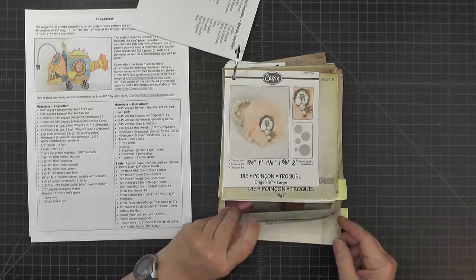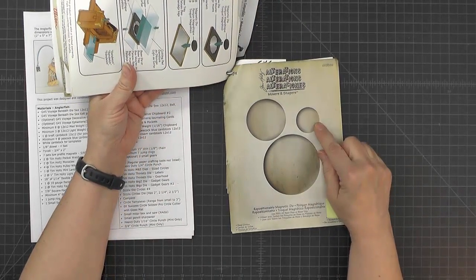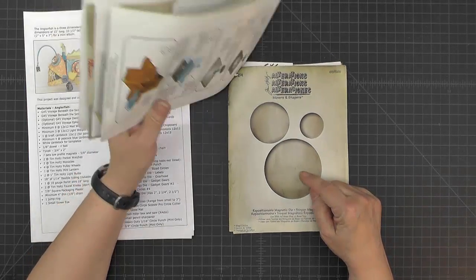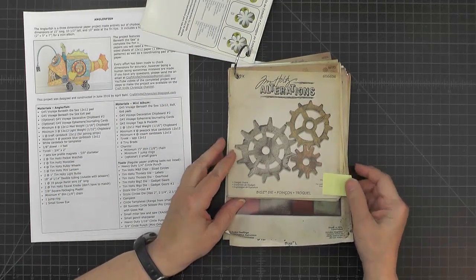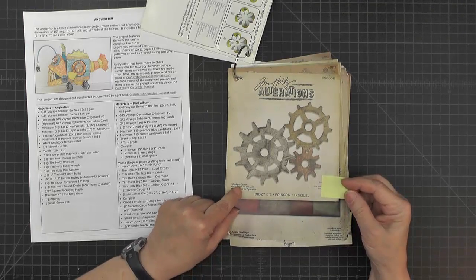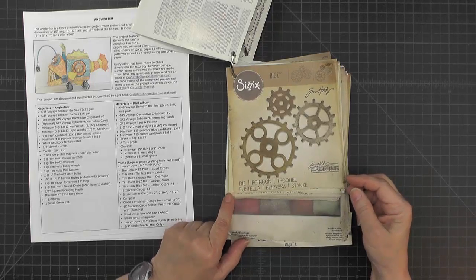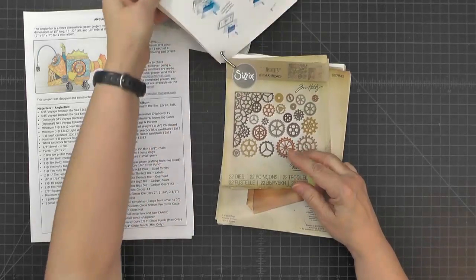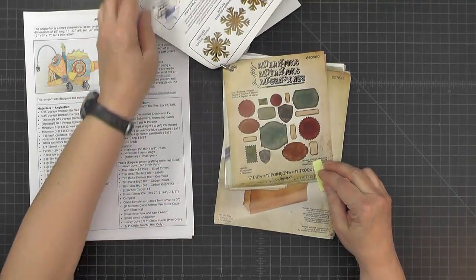And then there's a Movers and Shapers die that's also circles, and then I use two of the Gadget Gears dies, the Bigz dies, both Gadget Gears the original one and then Gadget Gears number two. And then two Thinlit dies. The first one is Gear Head and the other one is Labels.